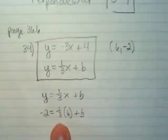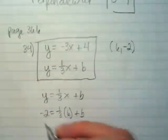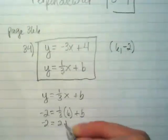And I'm going to solve one-third times six first, which is two. So I'm going to rewrite the equation as negative two equals two plus b.